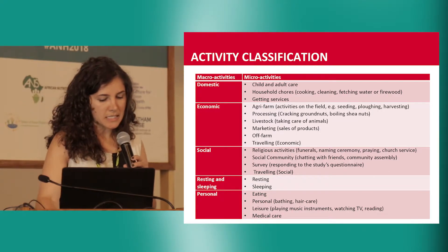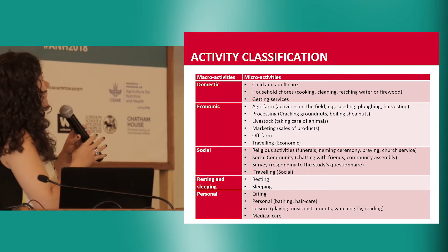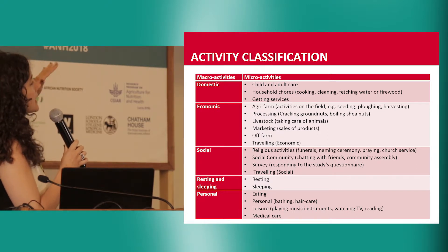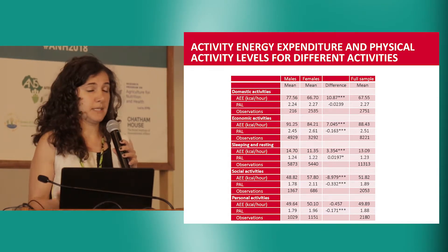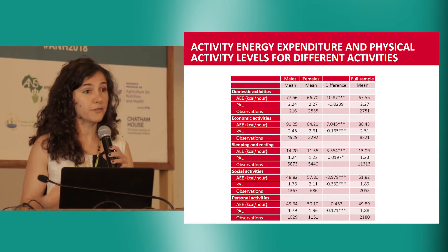By looking at the time use and activity dimensions of our survey, we are able to unpack what activity represents or influences these levels of PAL more. In this graph, we have plotted the differences in PAL between women and men by different activity categories: domestic activities, economic activities, individual sleeping and resting, and social activities. Women's PAL is dominated by domestic activity and economic activity, while men's participation in domestic activities is practically inexistent, and economic activities represent the main share of their total PAL.